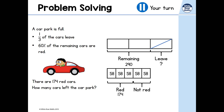If 290 represents two-thirds of the cars in the car park, I can work out one-third by dividing by two, which is 145. So each third is worth 145. Adding all the parts together gives 435 cars in the car park at the start.